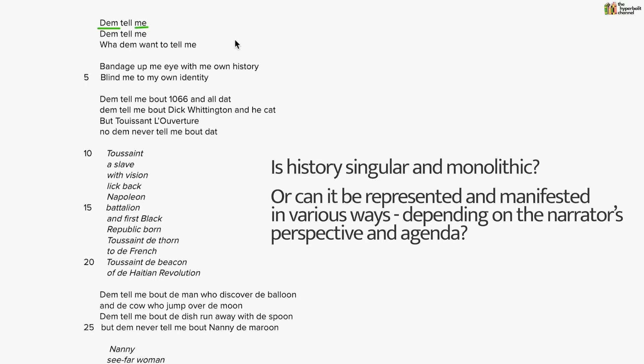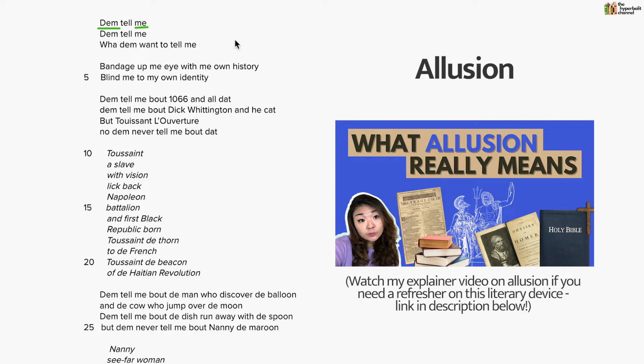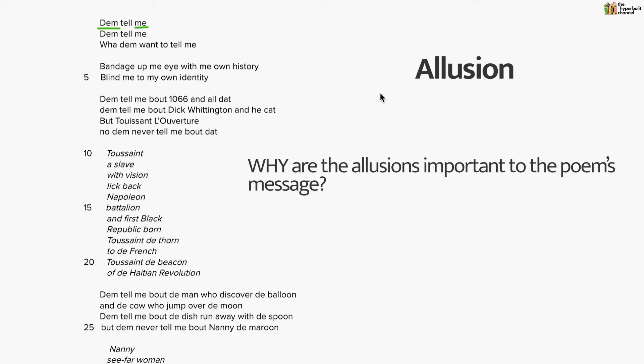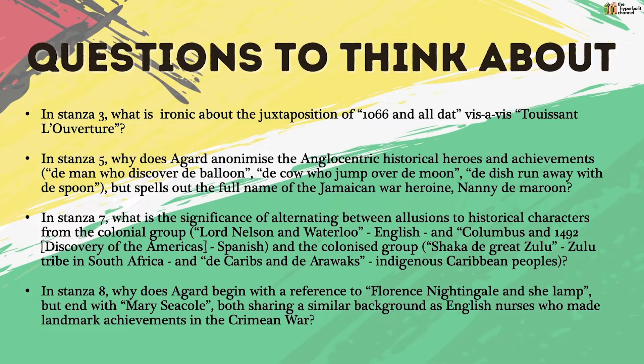The most prominent trope in this poem is allusion. A quick Google search will give you all the factual information about the historical figures and events referenced, but what's most important is your interpretation of why these allusions are significant to the poem's central message and why they are arranged as they are. Instead of going deep into the factual background, I want us to consider a couple of guiding questions to direct our focus toward analyzing the poem rather than getting caught up in superficial facts.